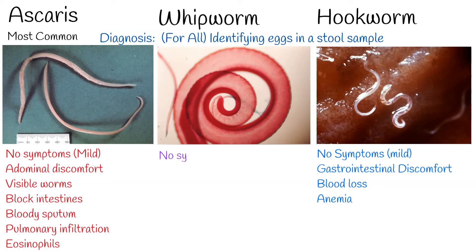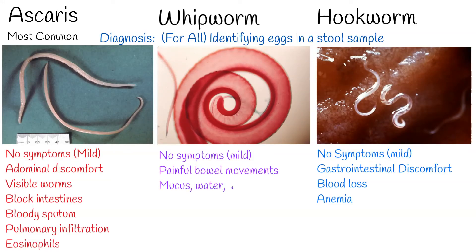People infected with whipworm can suffer light or heavy infections. People with light infections usually have no symptoms. People with heavy infections can experience frequent, painful bowel movements that contain a mixture of mucus, water, and blood. Rectal prolapse — when the rectum sags and comes out of the anus — can also occur. Children with heavy infections can become severely anemic and may grow more slowly.